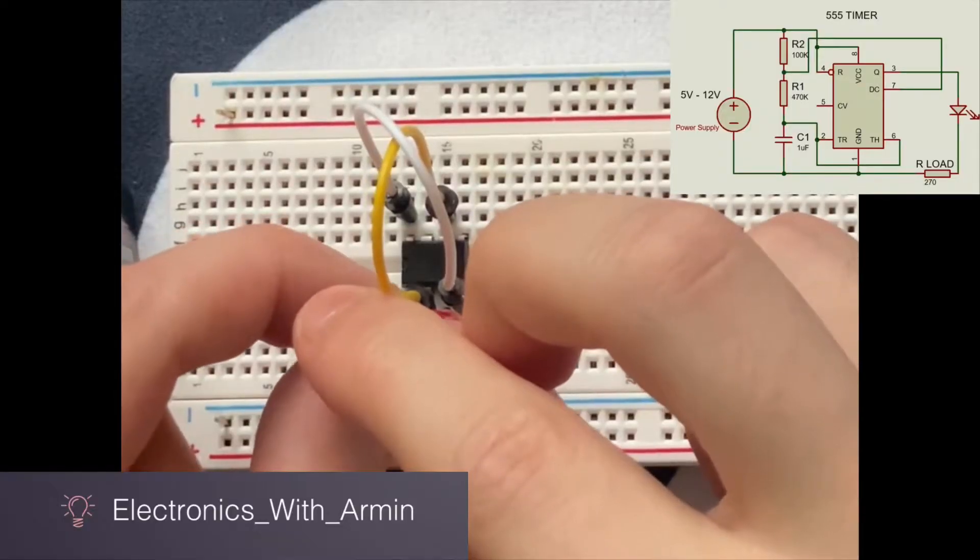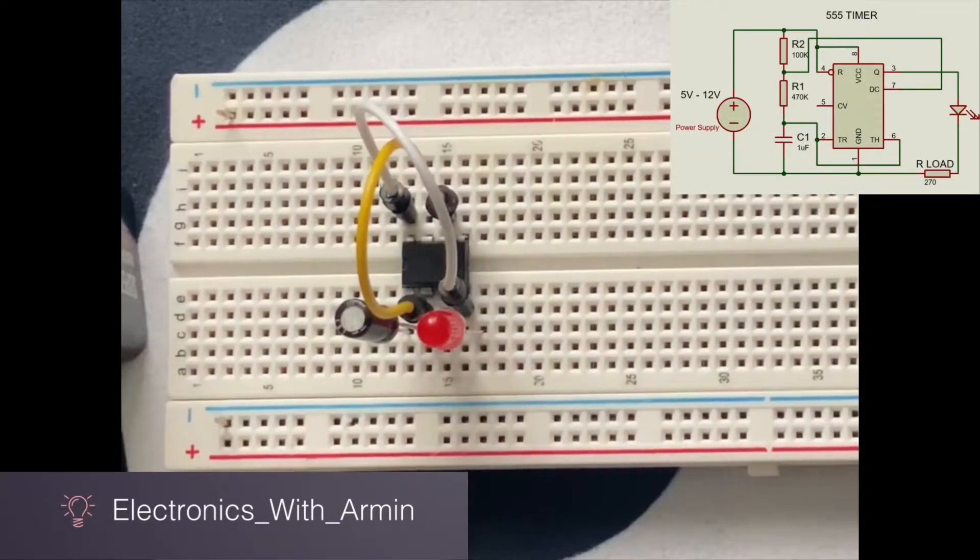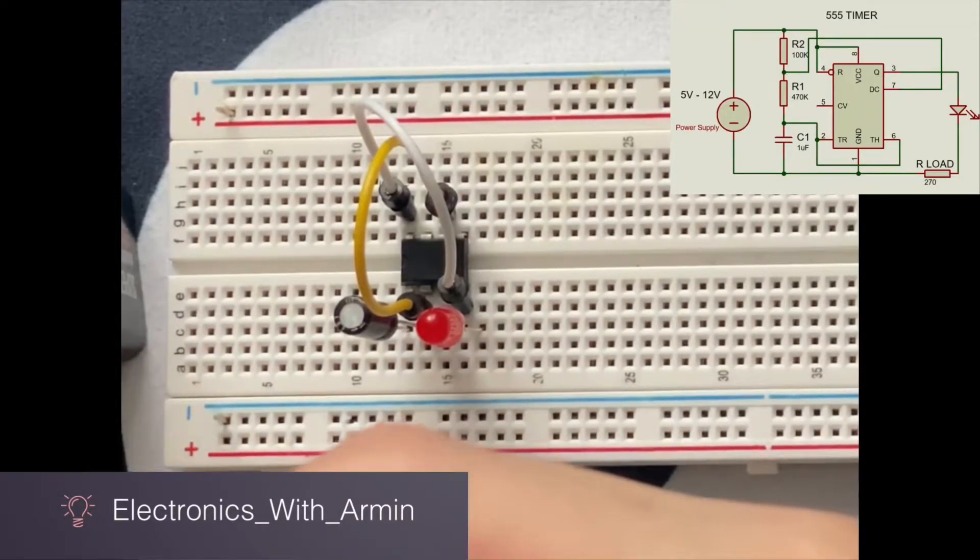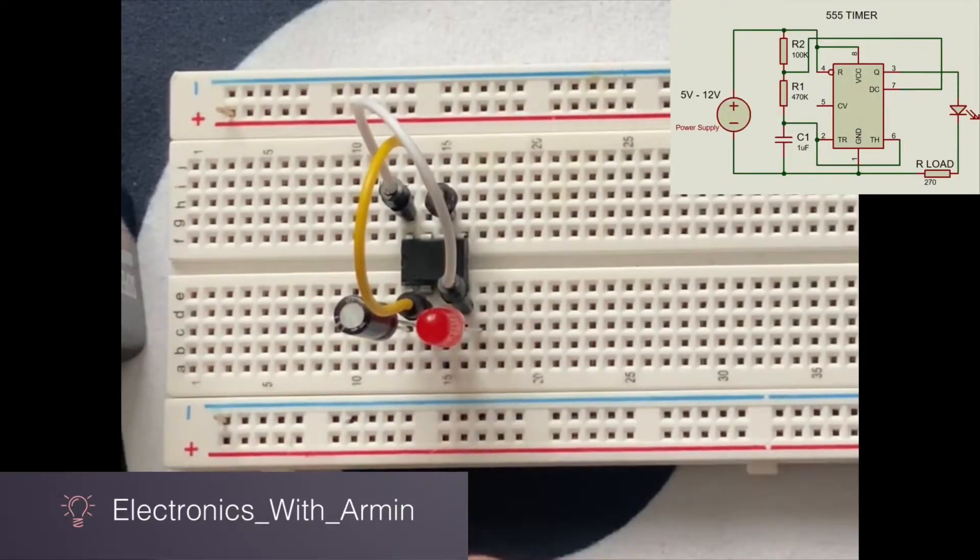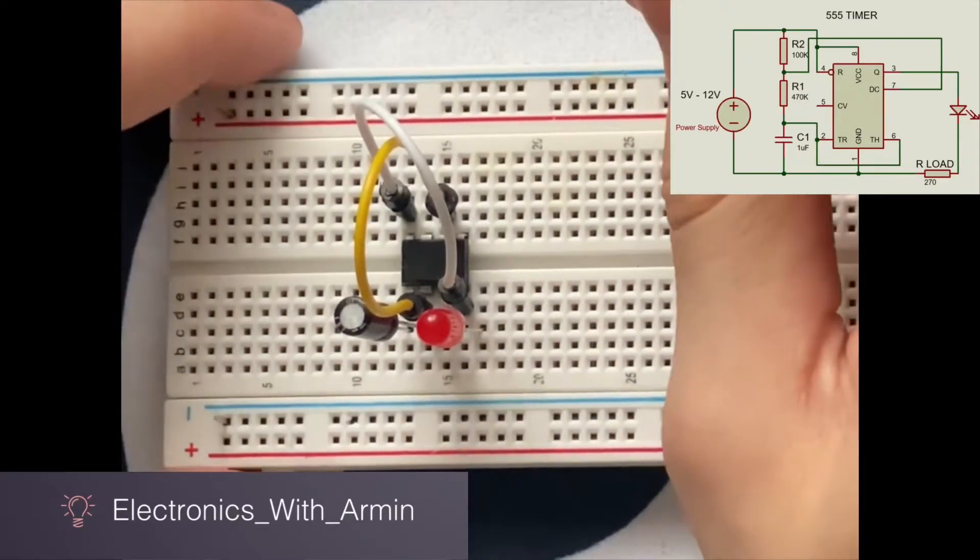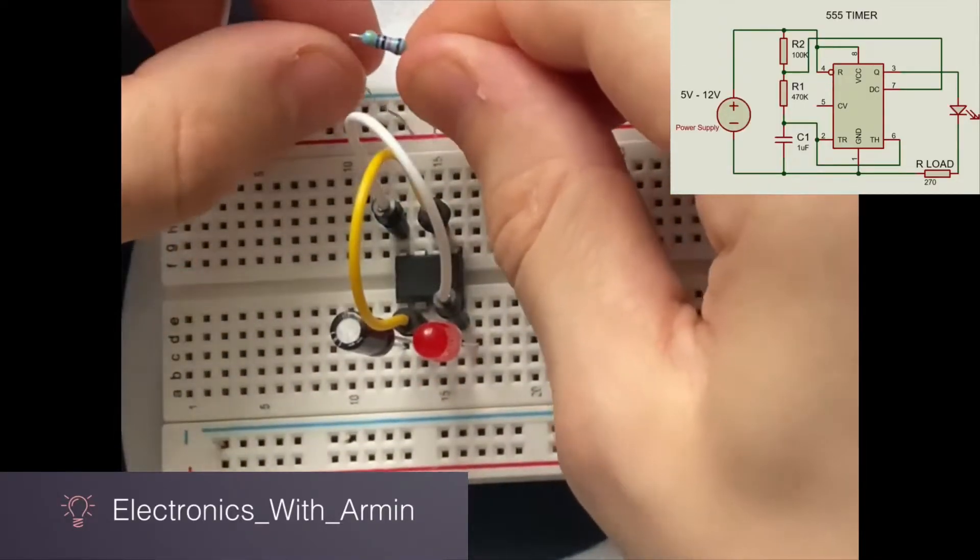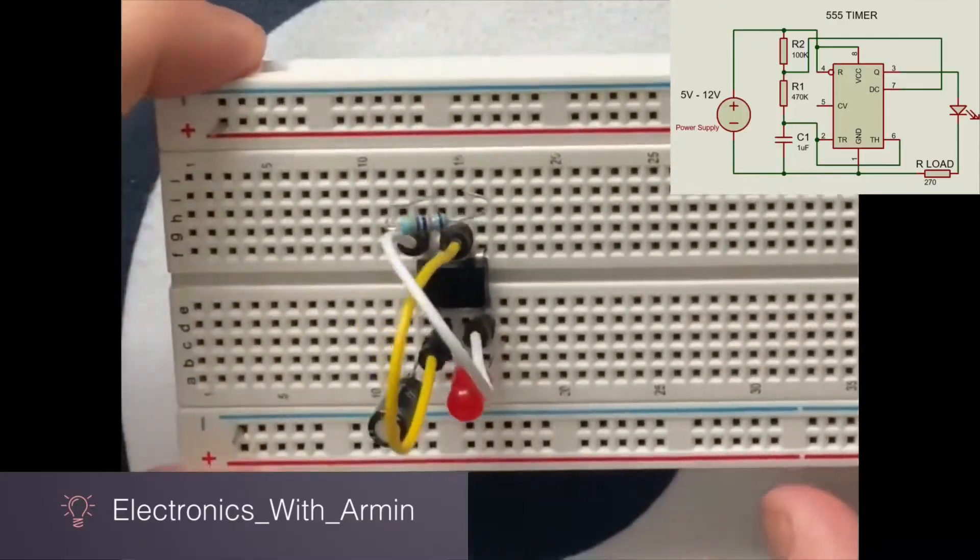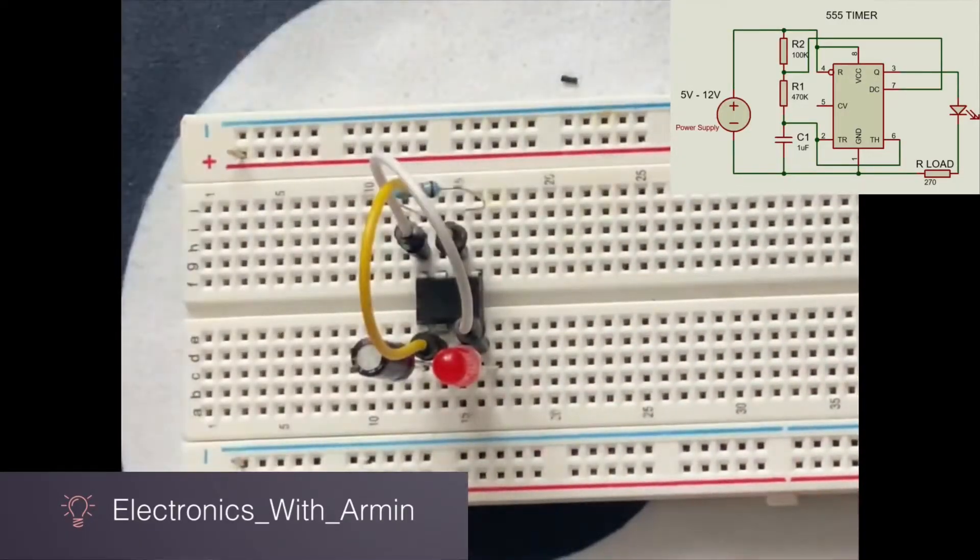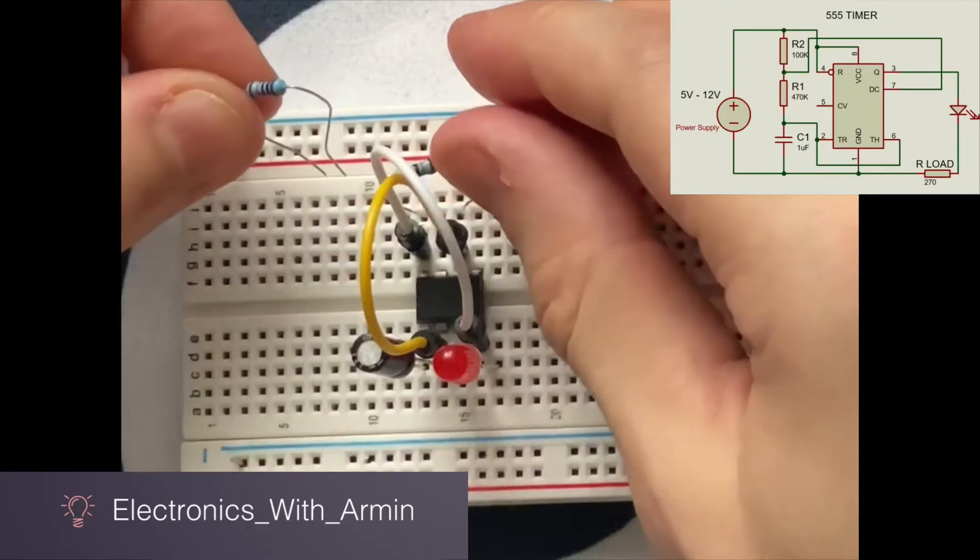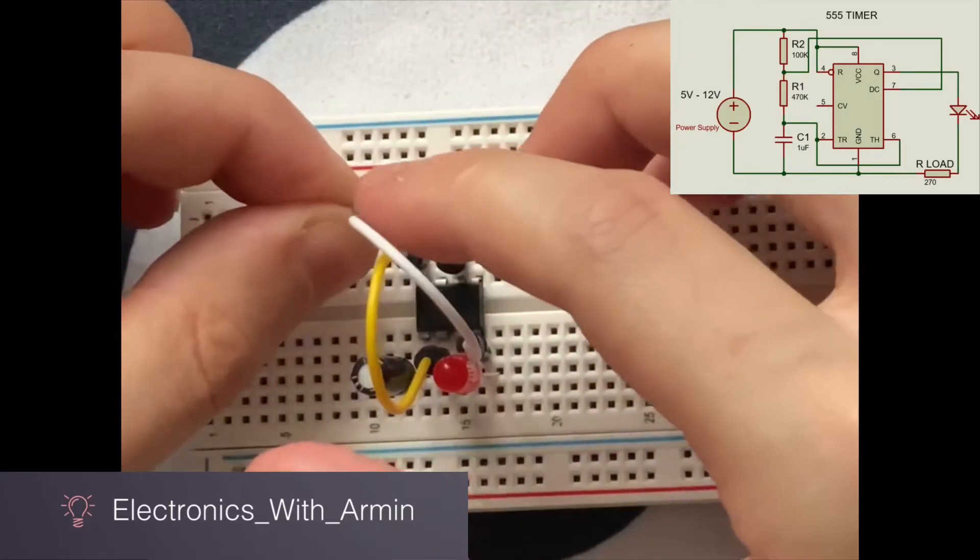Now we are going to connect our resistors to the circuit. Our 470 kilohm resistor, R2, is going to be connected to pin 6 and 7 of the IC. Pin 6 and pin 7, 470 kilohm resistor. R1, the 100 kilohm resistor, has to be connected from pin 7 to 8.